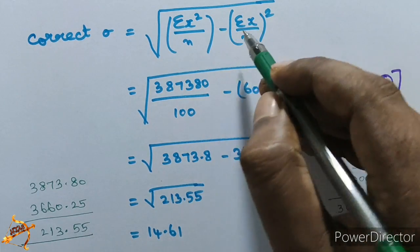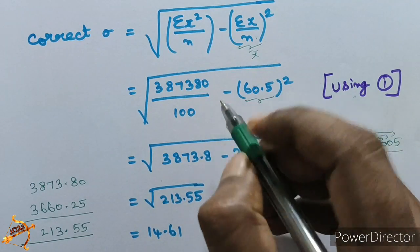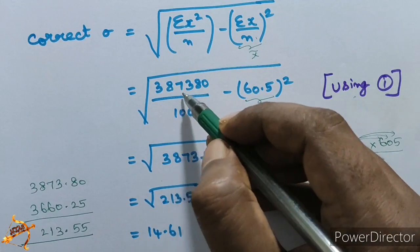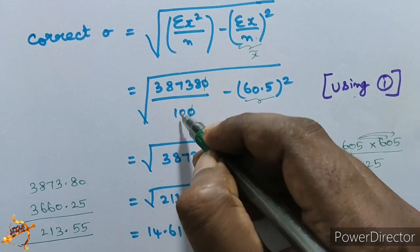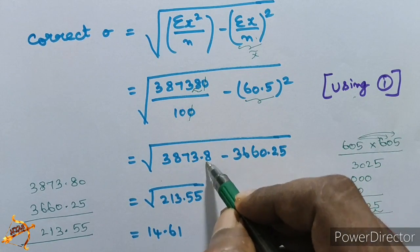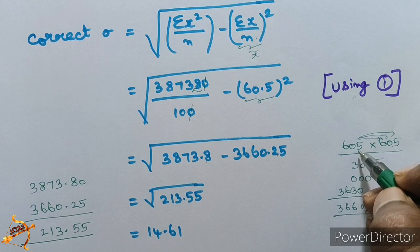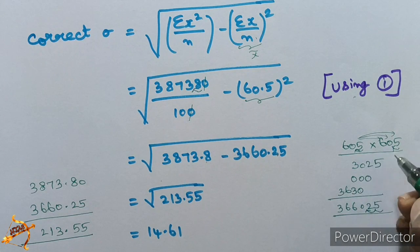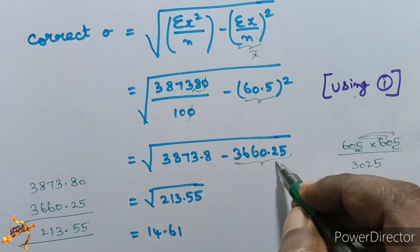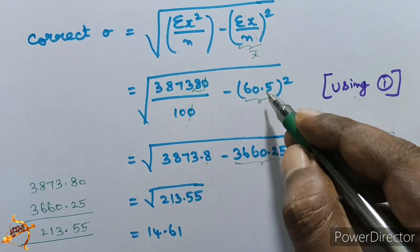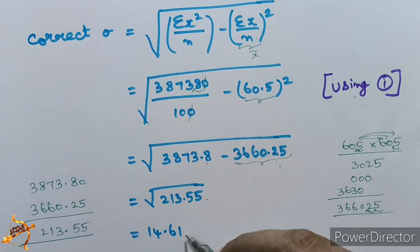Using correct Σx = 6050, correct x̄ = 60.5, correct Σx² = 387380, and n = 100. Correct σ = √(387380 / 100 − 60.5²) = √(3873.8 − 3660.25) = √213.55 ≈ 14.61. So the correct standard deviation is approximately 14.61, found using the long division method.